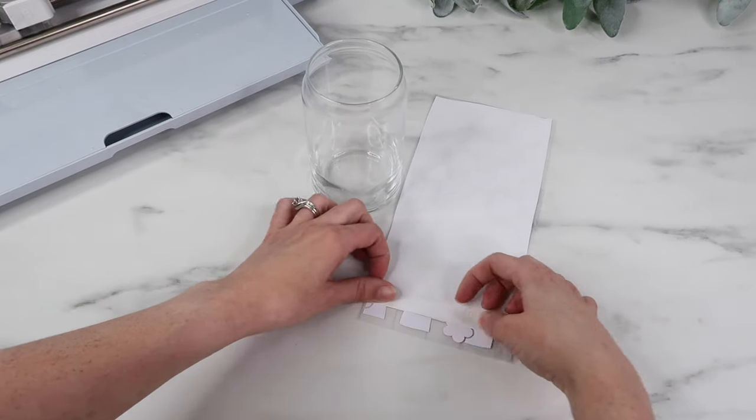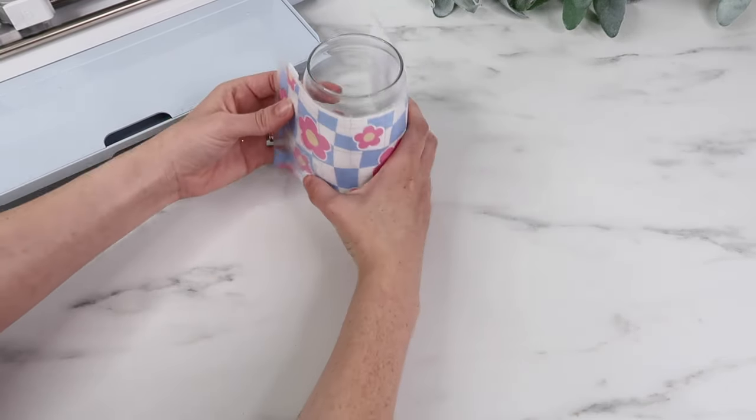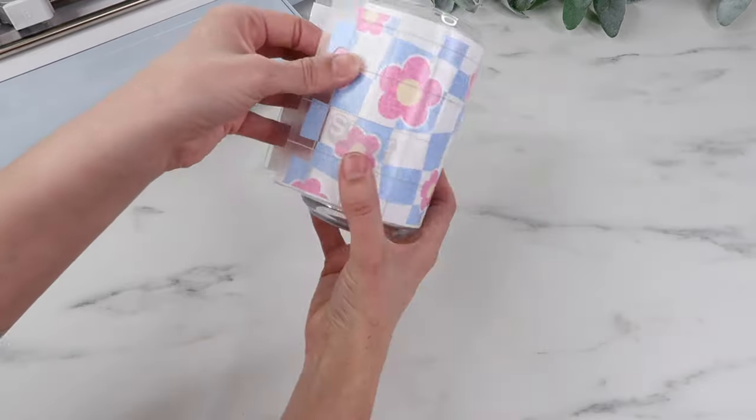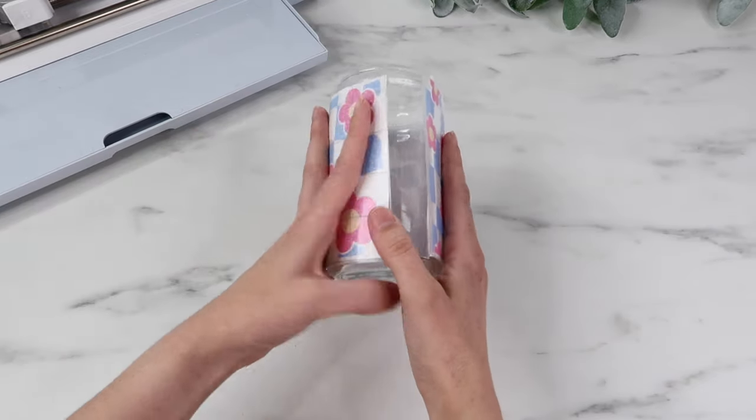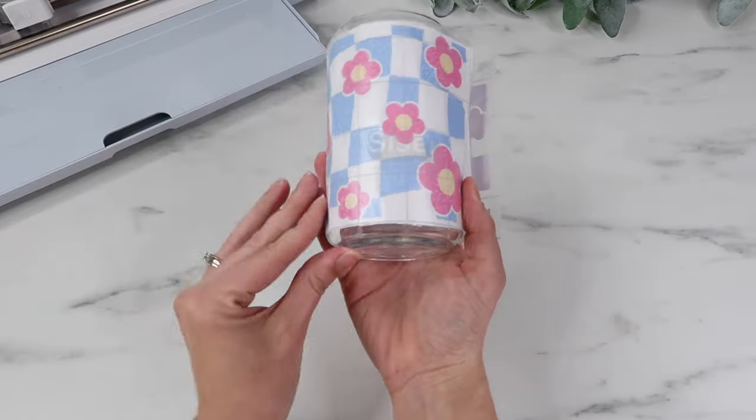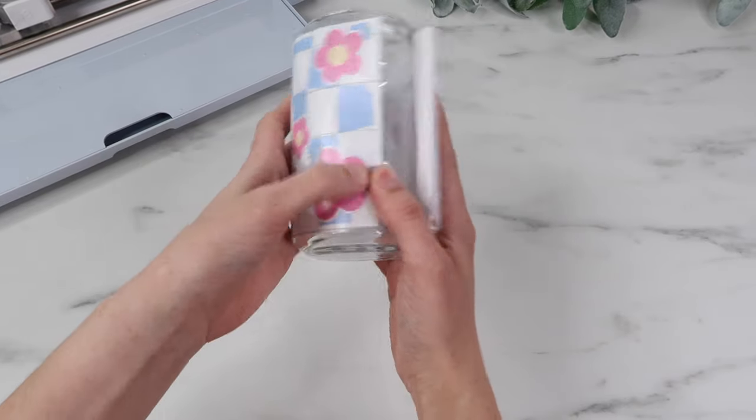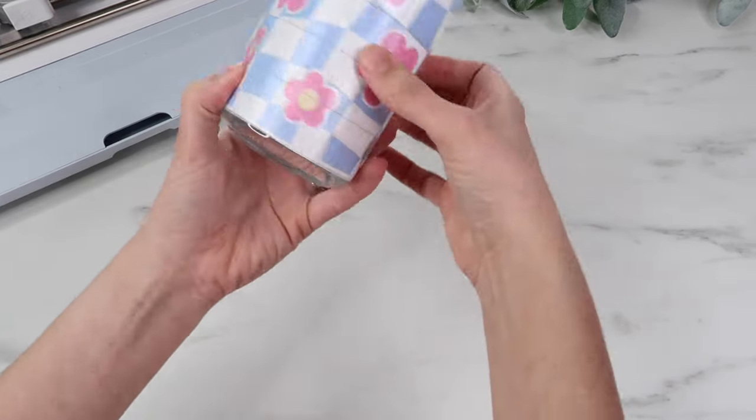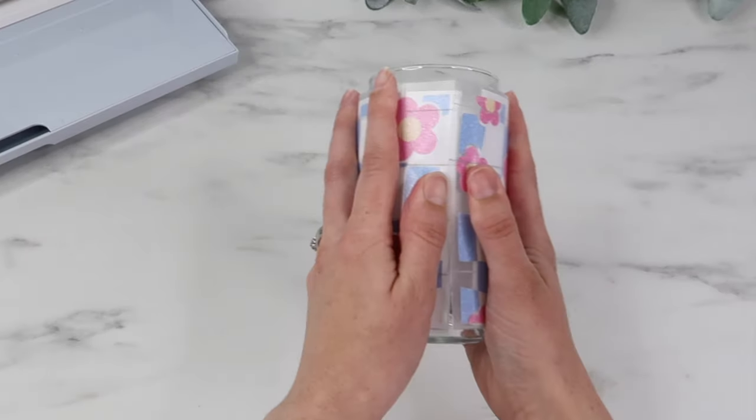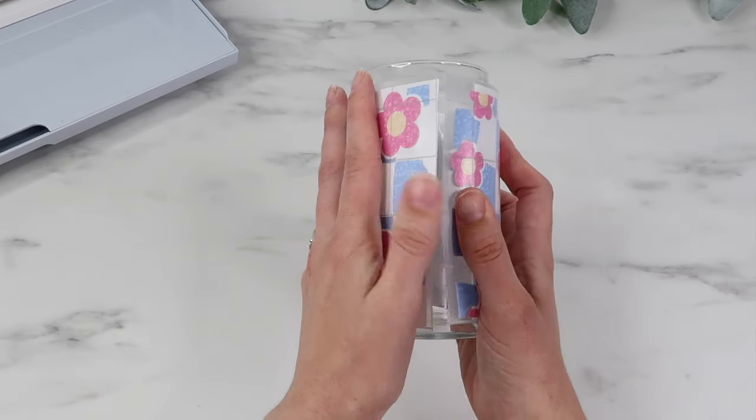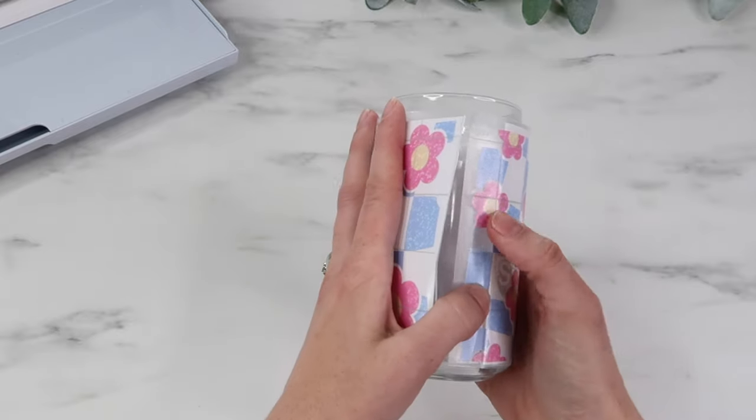When I add my vinyl, I kind of do the same thing as the laminate sheet. I just bend back just a little bit of the backing of the paper, then I wrap it around the cup. This is a good way to do it because it still has the backing on it, so I can make sure that it's lined up on the top and the bottom. Once it's lined up where I want it, I just press down on that space that doesn't have the backing.